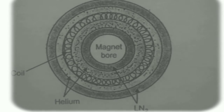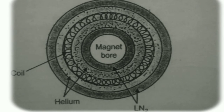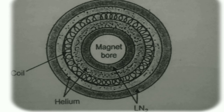Looking at the structure of the superconducting magnet: in the middle you can see the magnetic bore. Moving outward, there is liquid nitrogen, then liquid helium, then the coiling — which is the superconducting material — then helium gas again, and then liquid nitrogen. These two layers of gases prevent heat leakage and maintain the superconducting nature of the material.